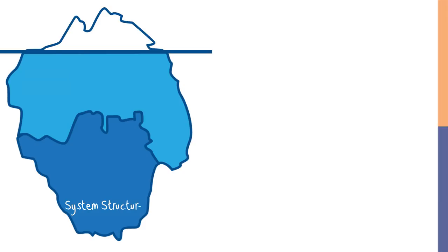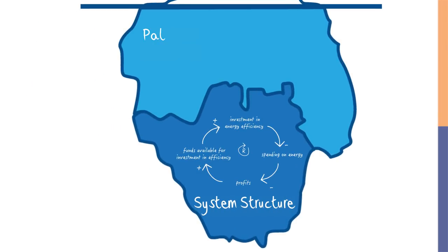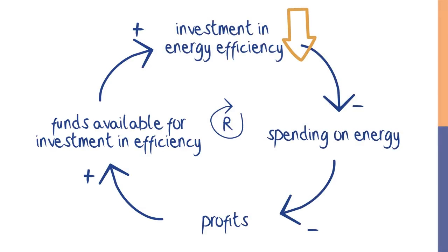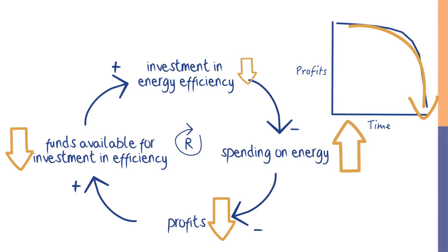If you think back to the iceberg metaphor, reinforcing feedback is at the level of system structure, and it produces a very specific pattern of behavior. Because reinforcing loops create increasing change in the same direction, they can produce, over time, exponential growth, where the amount of whatever variable is being controlled by the feedback loop begins to grow faster and faster. Because reinforcing feedback produces an amplification of an initial change, it can also produce exponential decay. In our example about investing in energy efficiency, imagine if the business owner decided for a few years not to invest — with less investment, there'd be more spending on energy, lower profits, and even less funds available for investment in efficiency in the future. If you see exponential growth or exponential decay in the system you're working within, then there's reinforcing feedback involved.